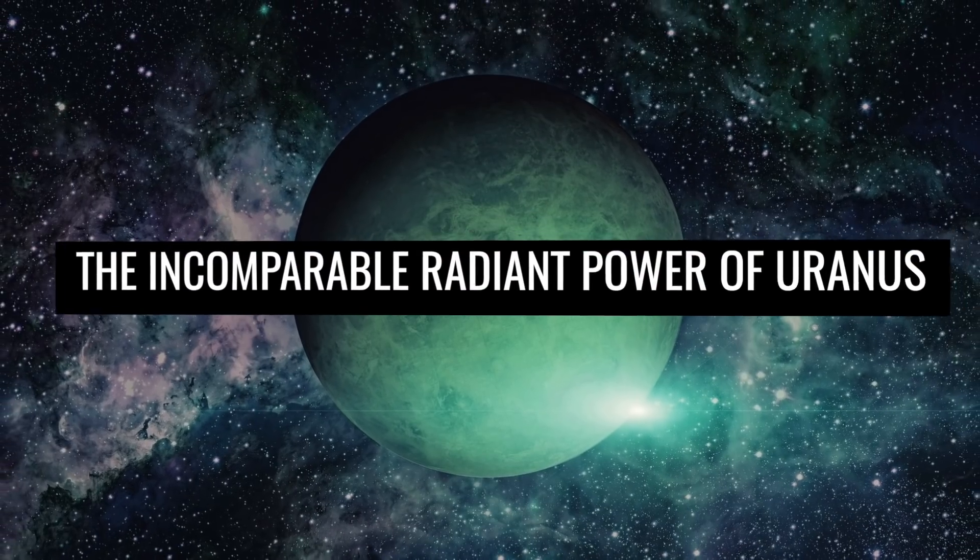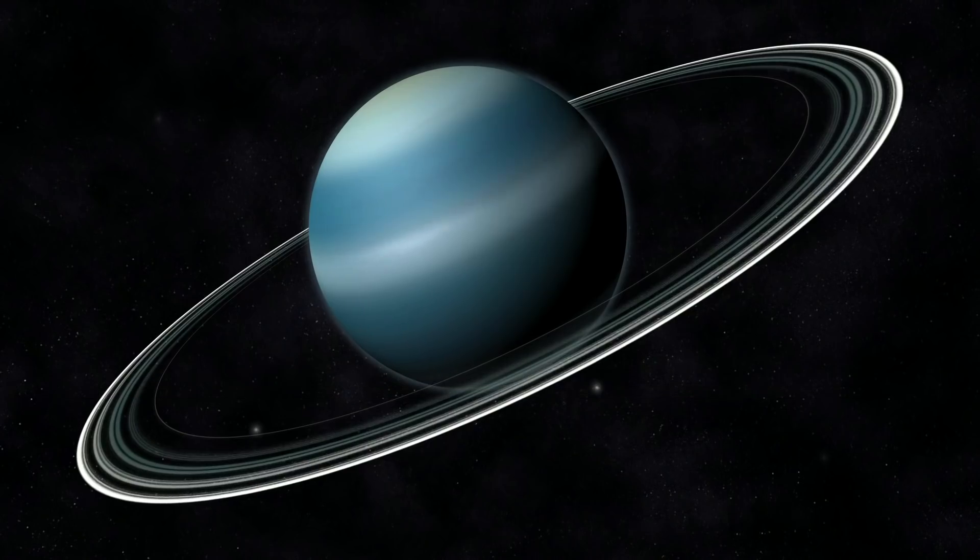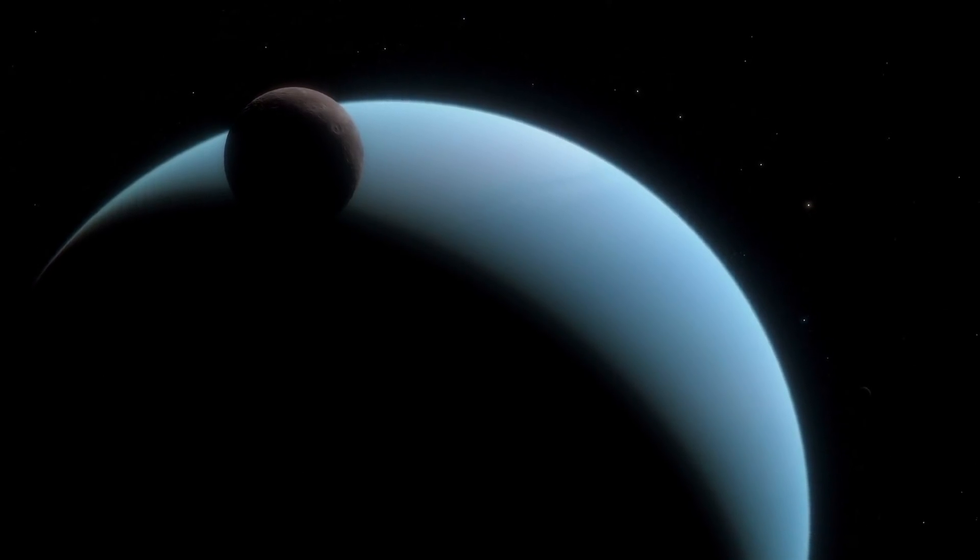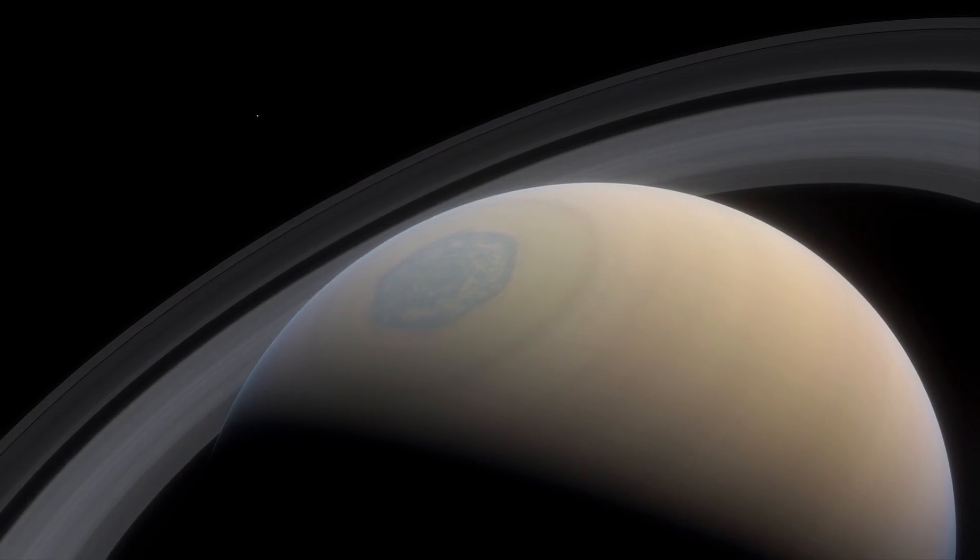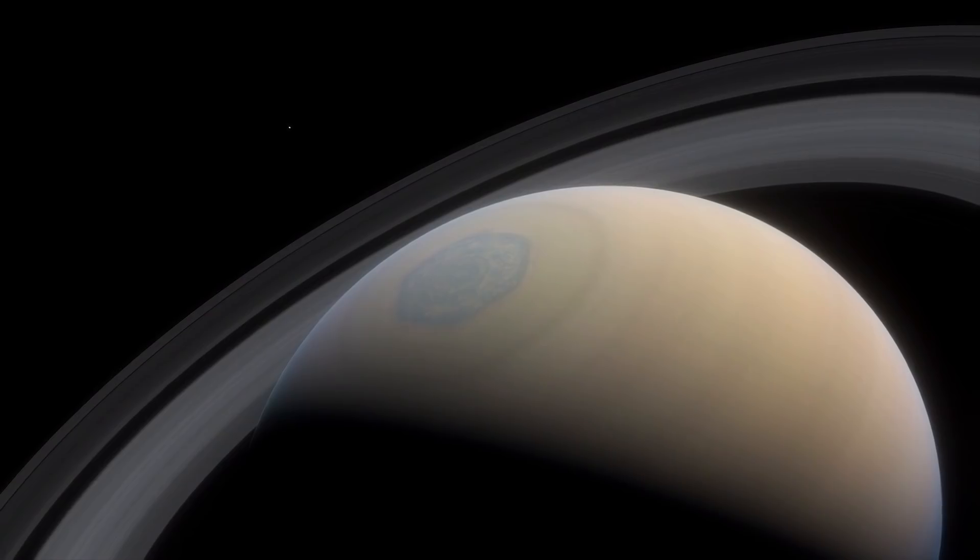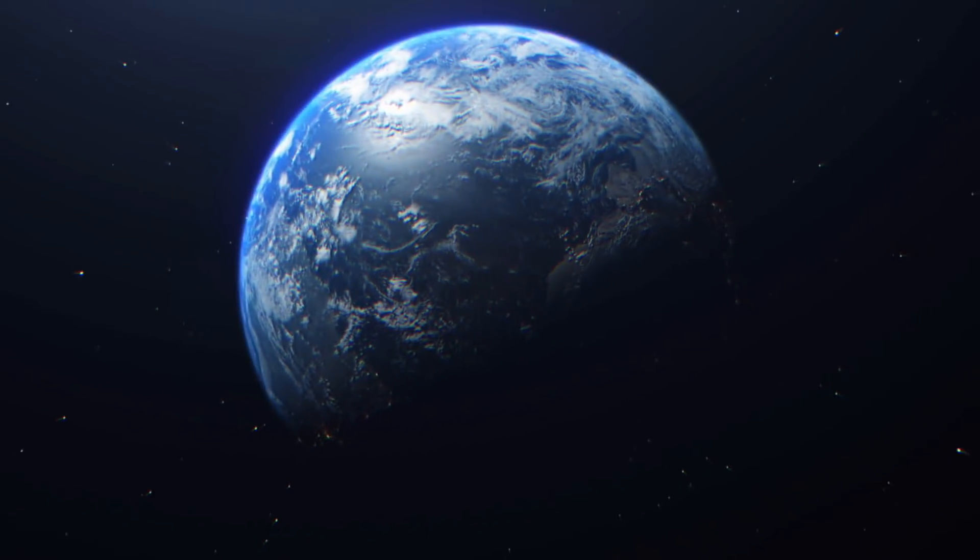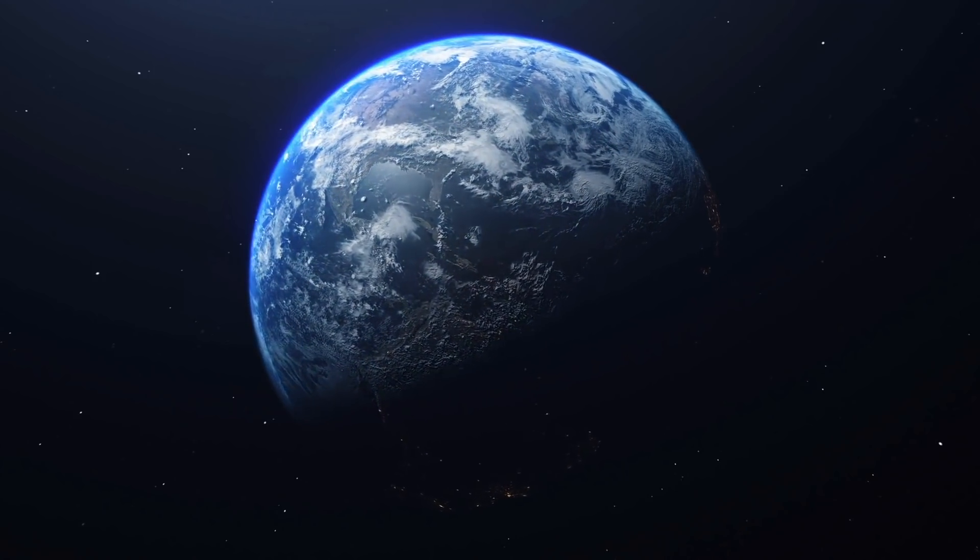The Incomparable Radiant Power of Uranus. Although Uranus, with its imposing diameter, is one of the largest representatives of our planetary system, in terms of density, it ranks at the bottom. On average, the density of the ice giant is 1.27 grams per cubic centimeter. It's only undercut by Saturn, whose average density is around 0.69 grams per cubic centimeter. By comparison, the corresponding value for our blue home planet is 5.51 grams per cubic centimeter.